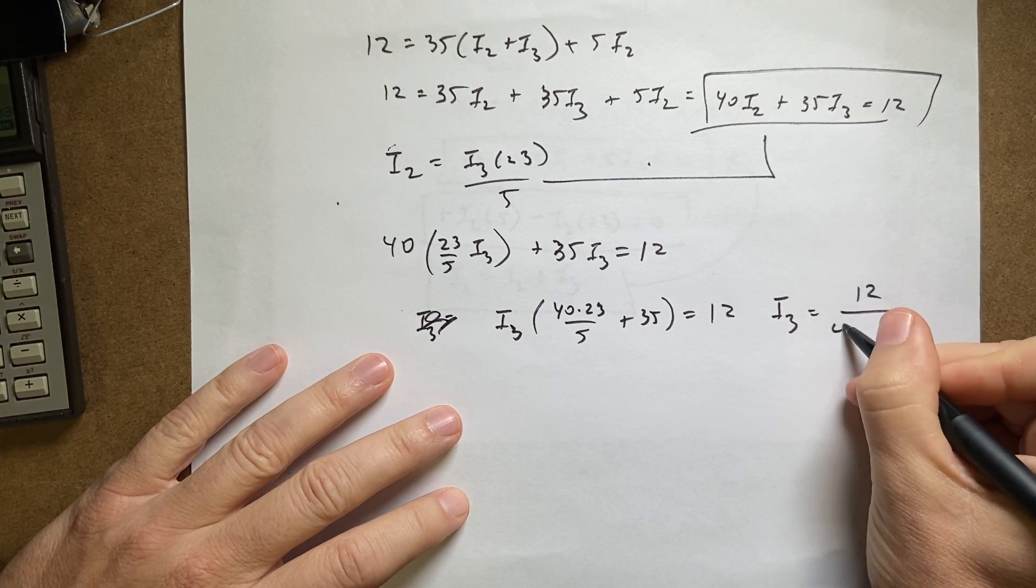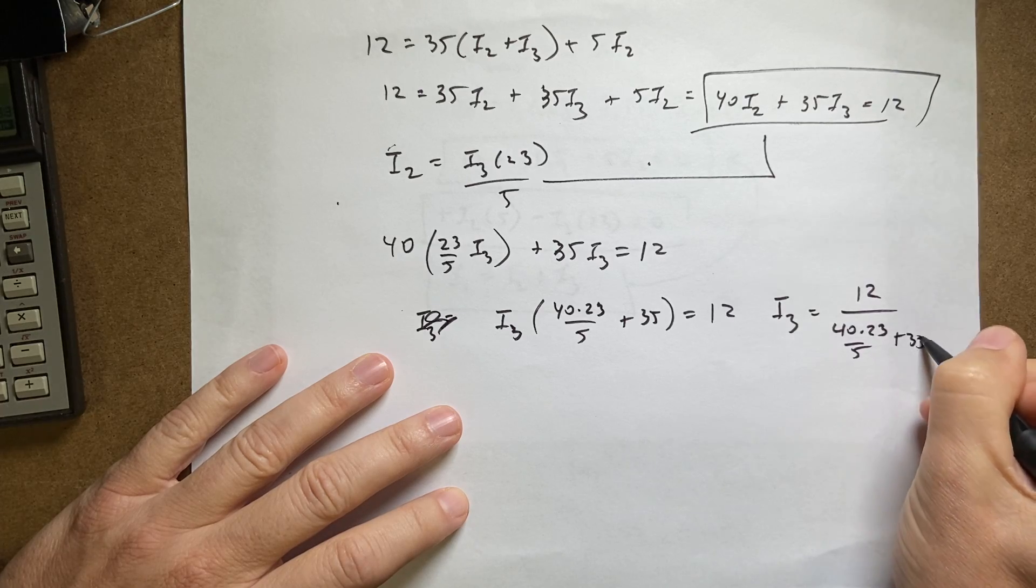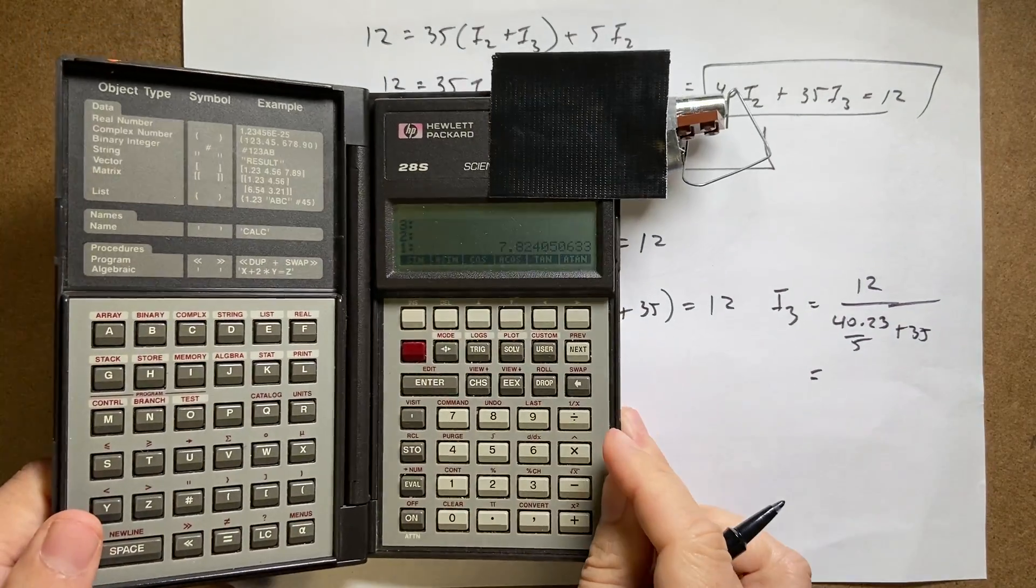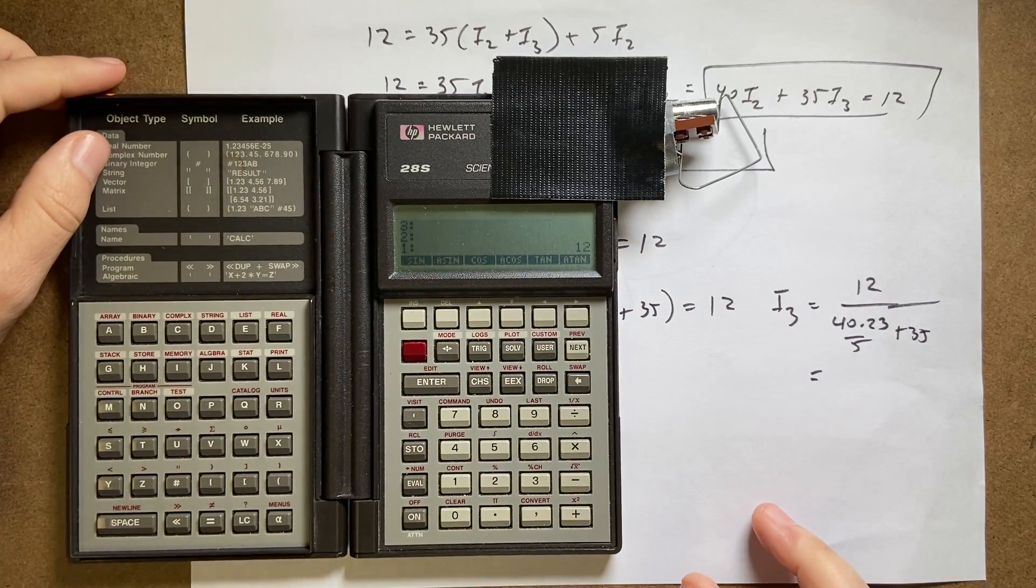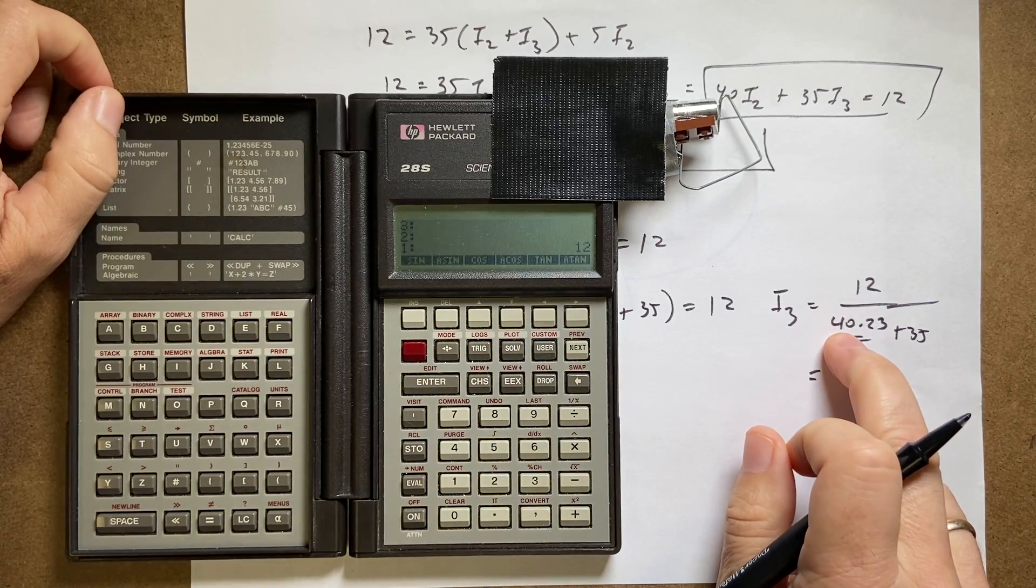Let's put that in the calculator. So I'm going to say 12—you be careful here because you have an improper fraction, so if you're not careful you're going to hurt yourself. So I'm going to do this right here: 40 times 23.